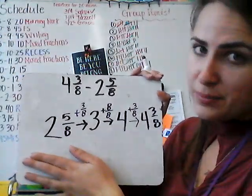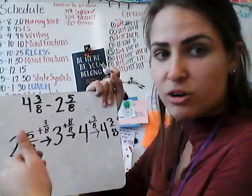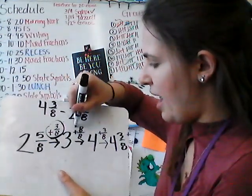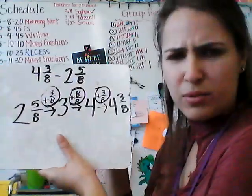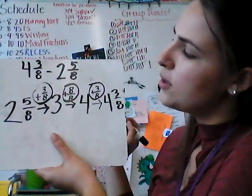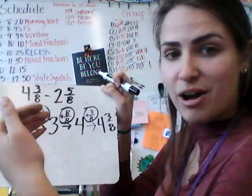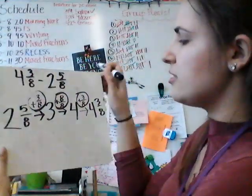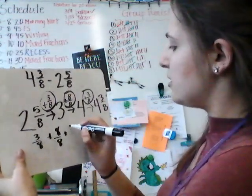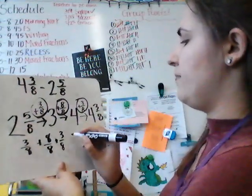So we've shown on our whiteboard how we can get in parts and increments from 2 and 5 eighths to 3, to 4, and then to 4 and 3 eighths. These little parts that we added — what do you think we're going to do with these? They're important. These are going to be our answer — the other part in our addition problem. So let's add them together: 3 eighths plus 8 eighths plus 3 eighths. 3 plus 8 is 11, and 11 plus 3 is 14 eighths.